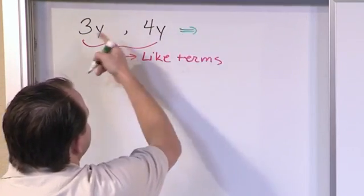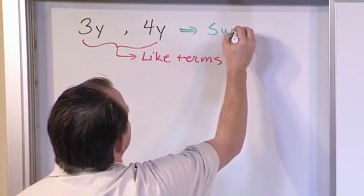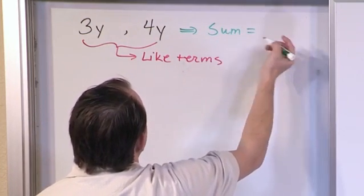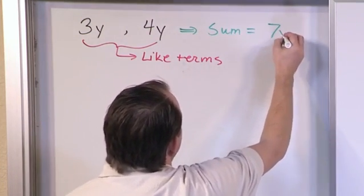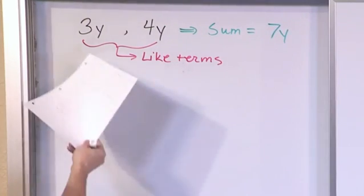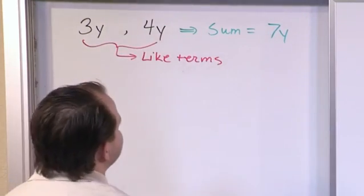So if I wanted to add these two terms together, what do you think the sum would be? Well, 4 plus 3 is 7, and I'm still talking about y, so I have to keep my y along for the ride. So if I were to add these two things together, I would get 7y.